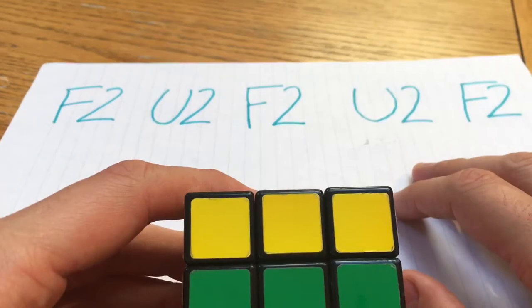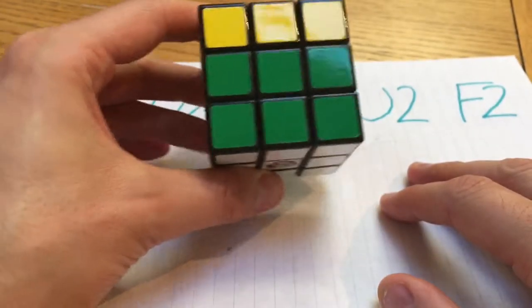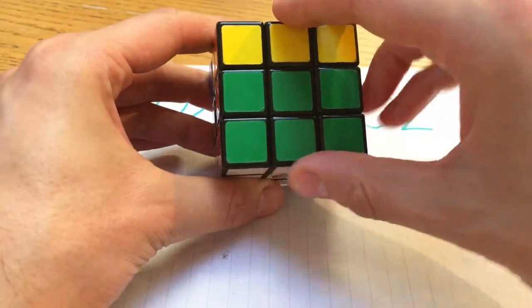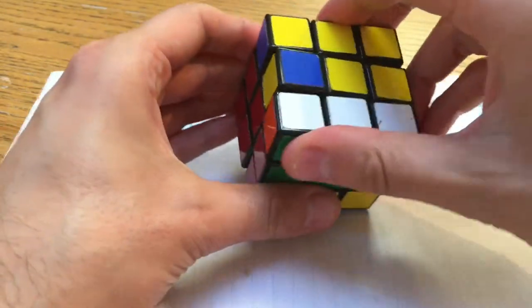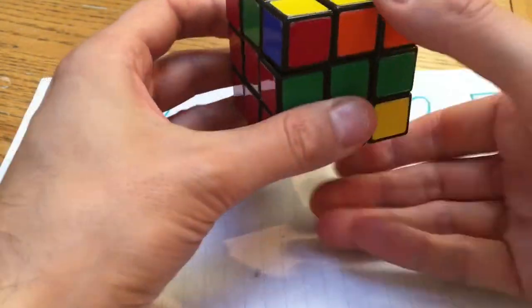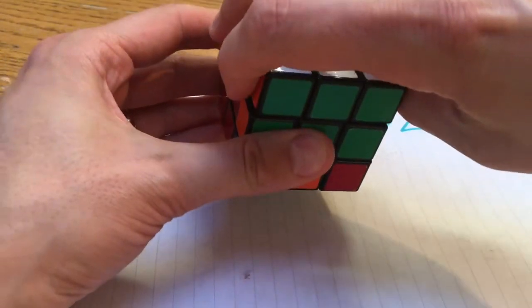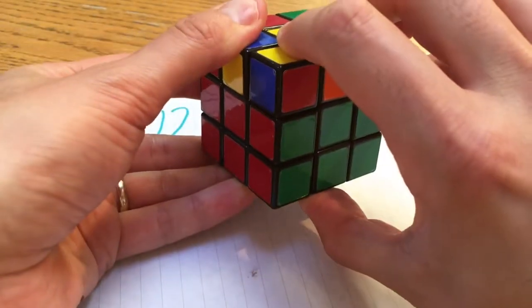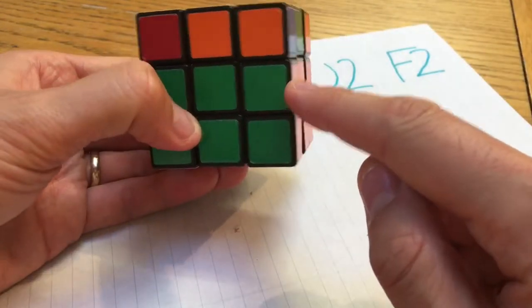It's very simply F2 U2 F2 U2 F2. That simply means that you do a half turn on the top face, a half turn on the front face, a half turn on the top face and a half turn on the front face. And there you have it. The two pieces have been swapped.